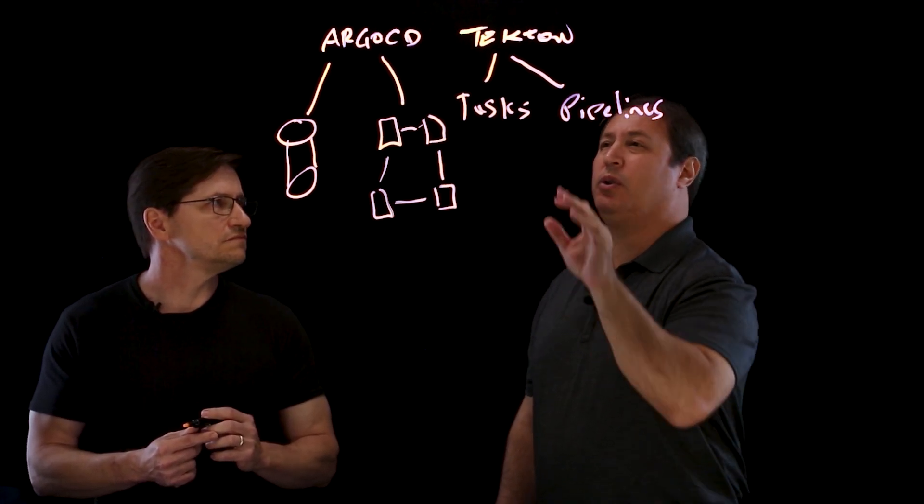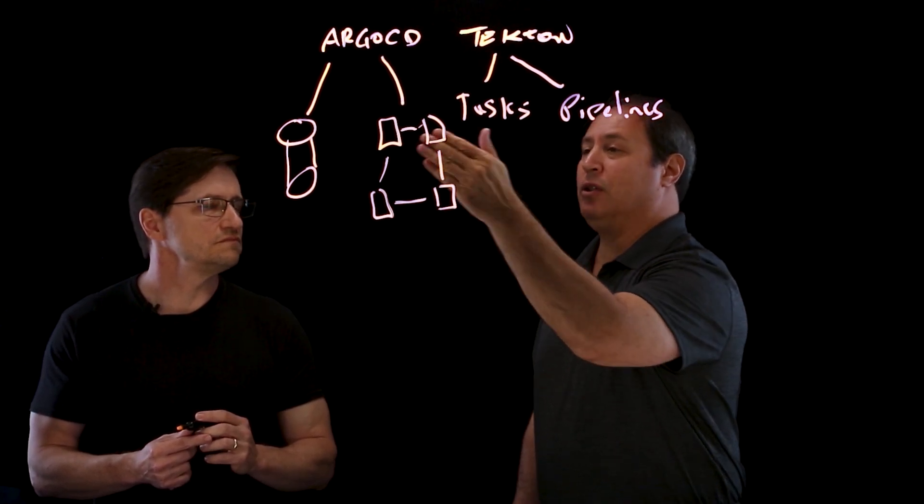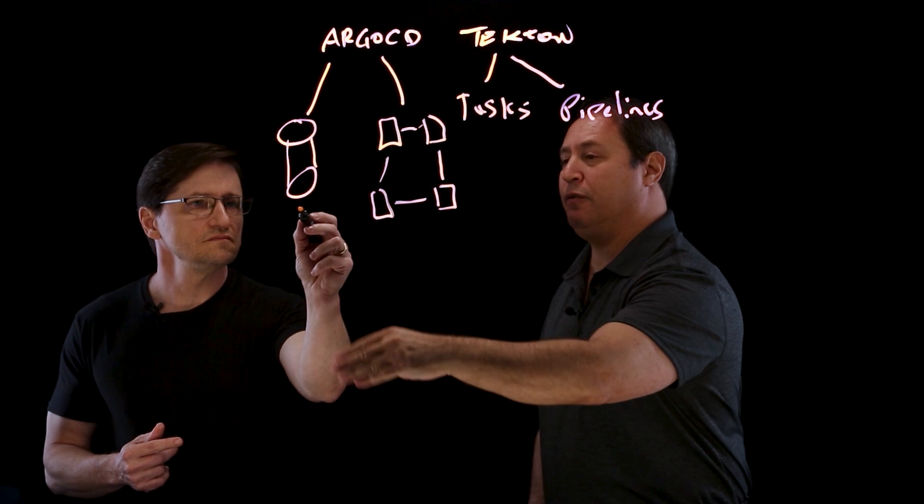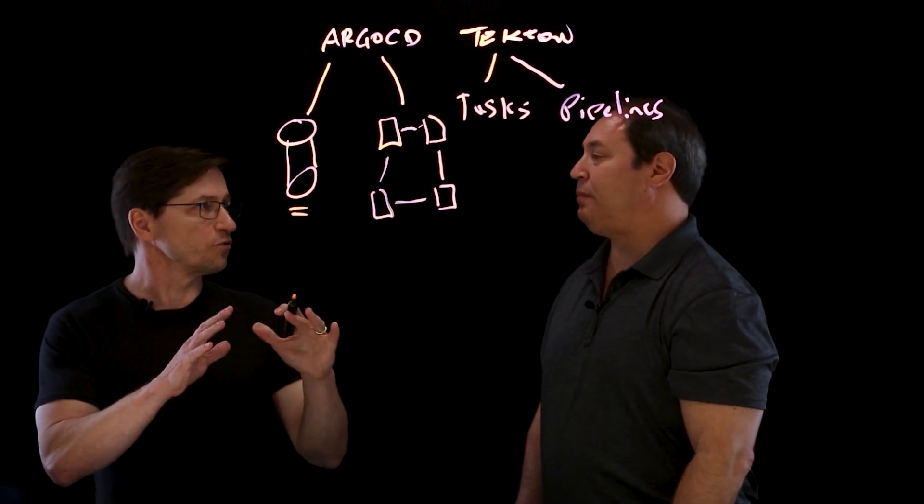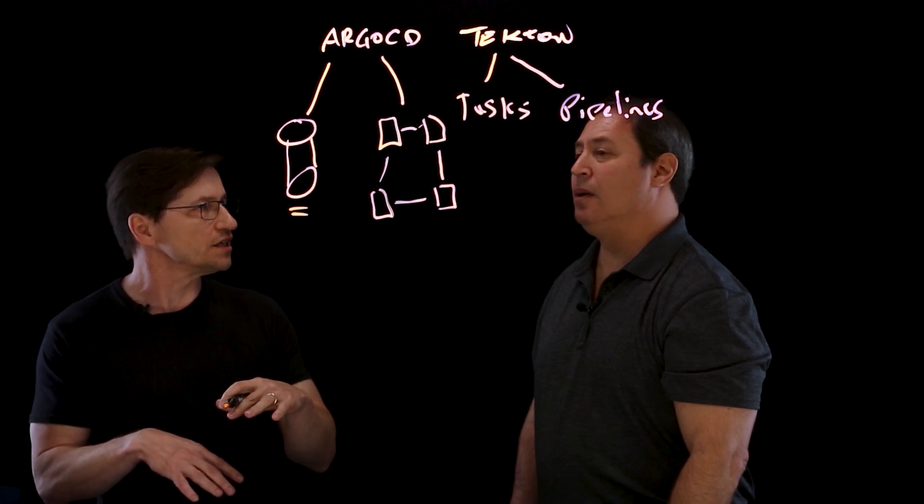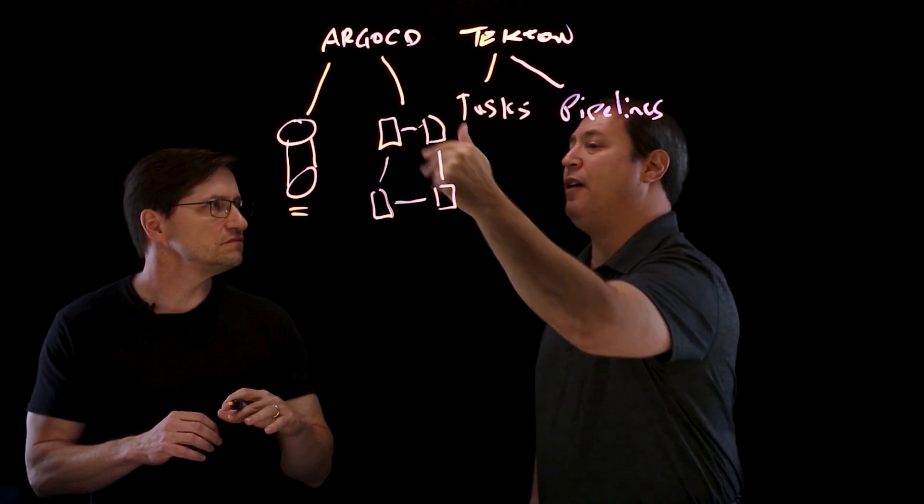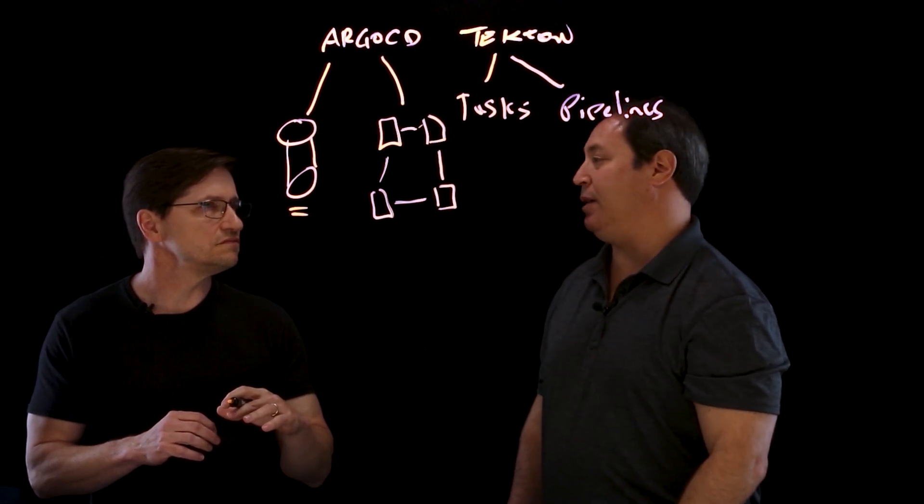Now, the one thing you have to look out for is Argo CD is you typically have two repos. You've got the repo for the YAML files and the repo for the source code. So the source code for my actual applications and then for the infrastructure, I have a separate one, as you're saying. You've got a separate repo for the actual source code and a separate repo for those YAML files that control the deployment of your applications.